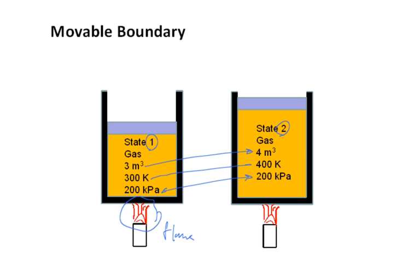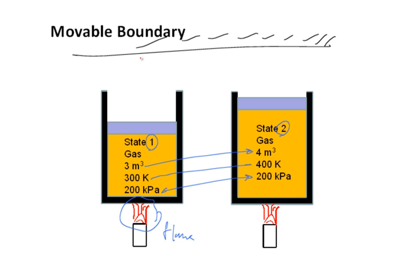Here's the difficulty in thermodynamics: change the problem a little and the engineer has to figure out how to solve it. Say I put a rigid surface up here and add a little spring. As the piston moves from state 1 to state 2, the spring compresses. Now you have the weight of the piston plus the spring force pushing down — so the final pressure won't stay at 200 kilopascals; it'll go up.